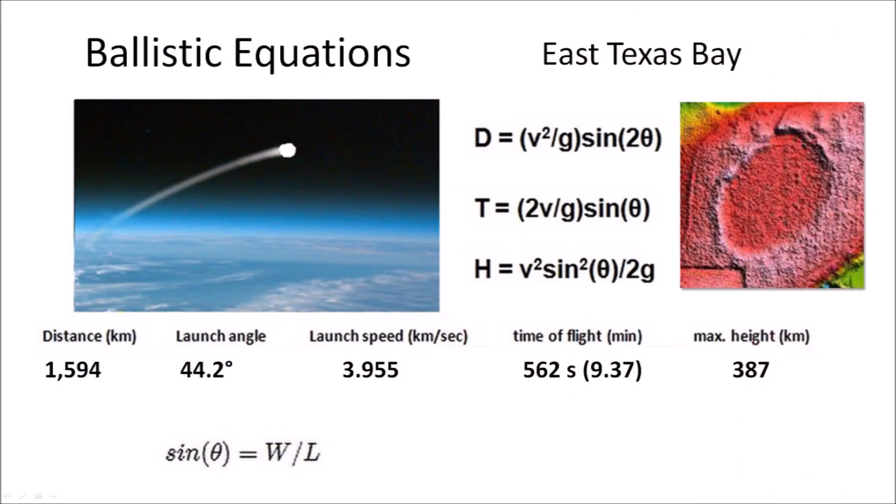The ballistic equations indicate that the glacier ice boulder that made this basin was launched at a speed of 3.955 kilometers per second. It had a flight time of 9.37 minutes and reached a height of 387 kilometers above the surface of the Earth. This is one of the highest trajectories and longest flight times that I have seen. The atmosphere only extends to 100 kilometers above the Earth's surface, so the trajectory was a suborbital spaceflight in the vacuum of space.